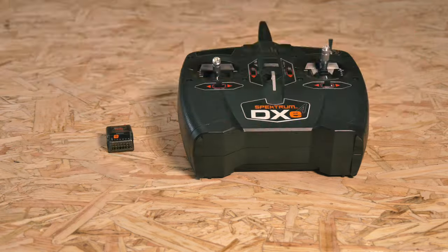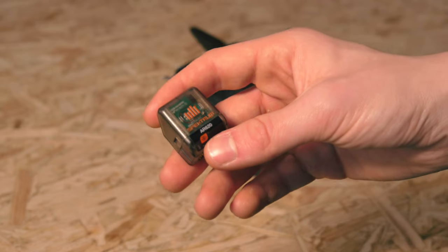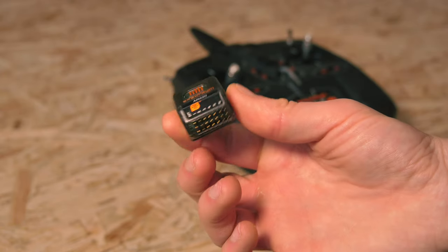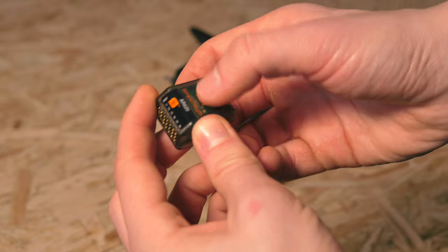Here's how to bind a Spectrum DXC transmitter to a Spectrum AR620 receiver. These new receivers are really great as they feature telemetry capabilities and don't need bind plugs to bind.